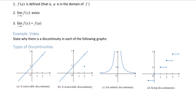Let's look at the graphs to determine the different types of discontinuity and the reasons that we have a discontinuity. In graph A, we have what's called a removable discontinuity. Notice that f of 2 — there's a hole there — which means f of 2 is not defined.